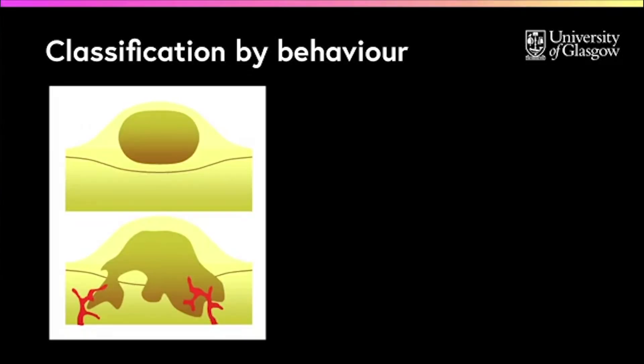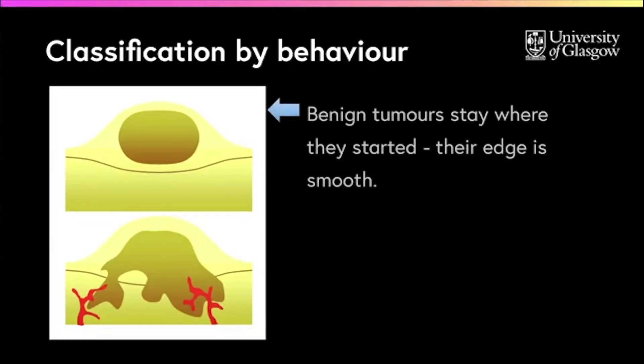What are benign and malignant tumours? How do we tell them apart and why is it important? In the patient, benign tumours do not invade. Instead, their edge is smooth. Benign tumours stay where they started.